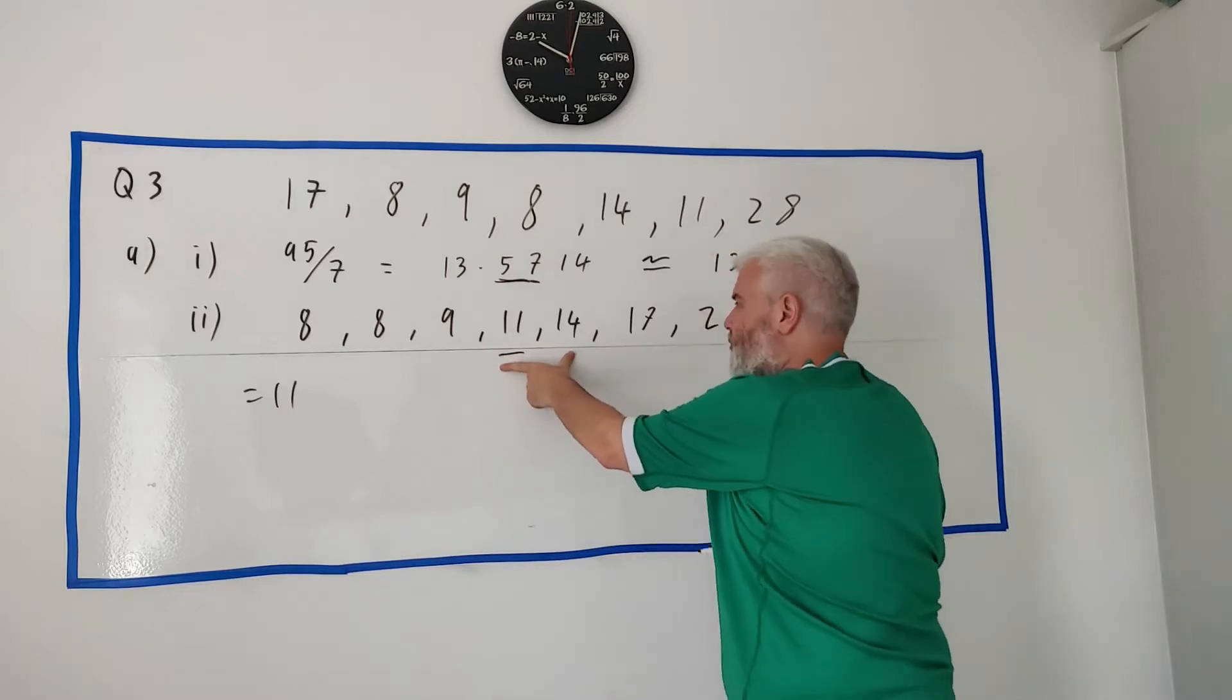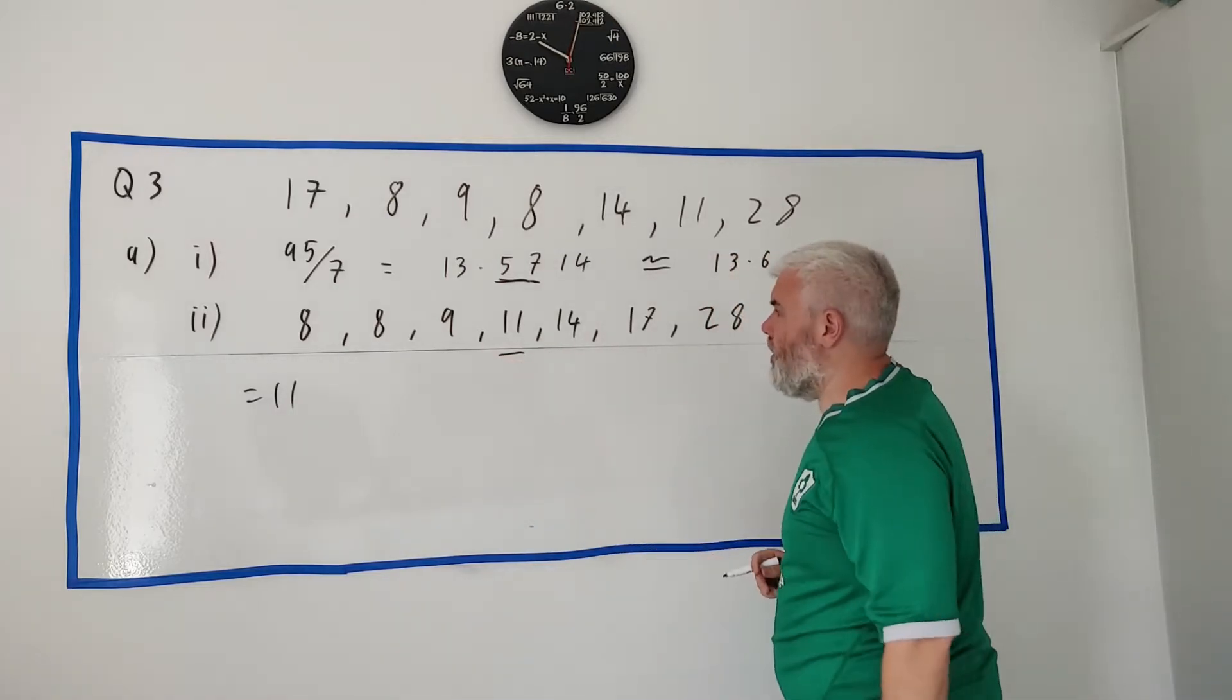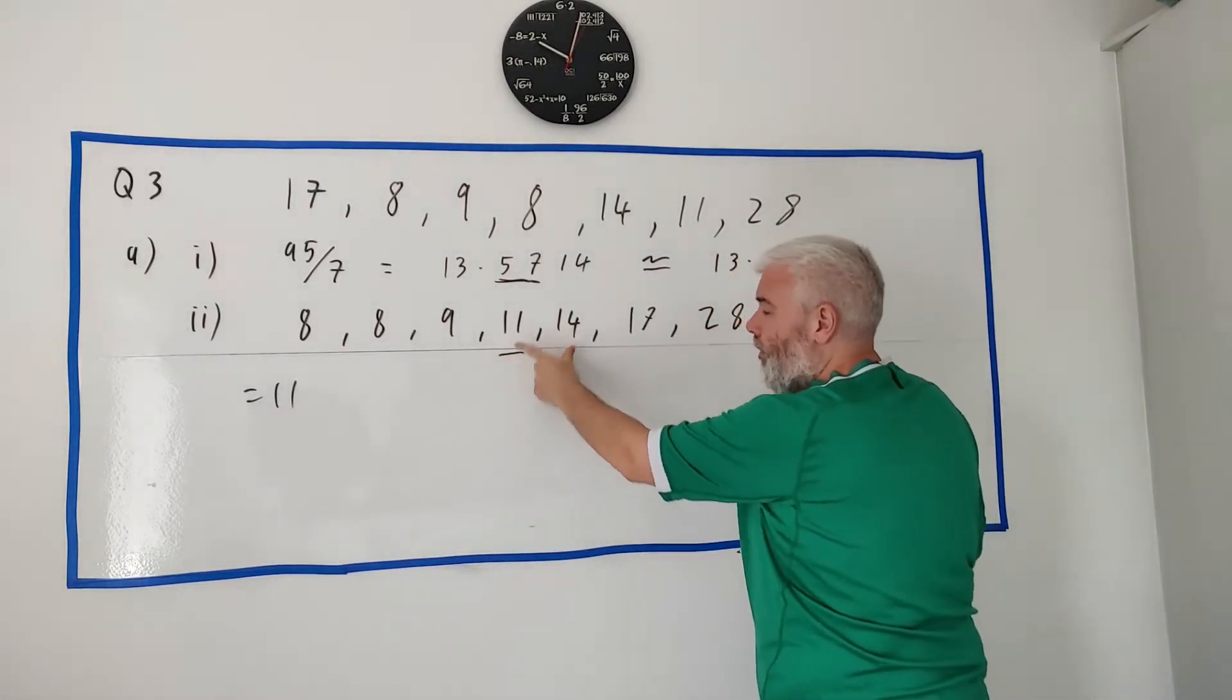When there's two numbers in the middle, which we will see in part three, we need to get the mean of those two numbers.